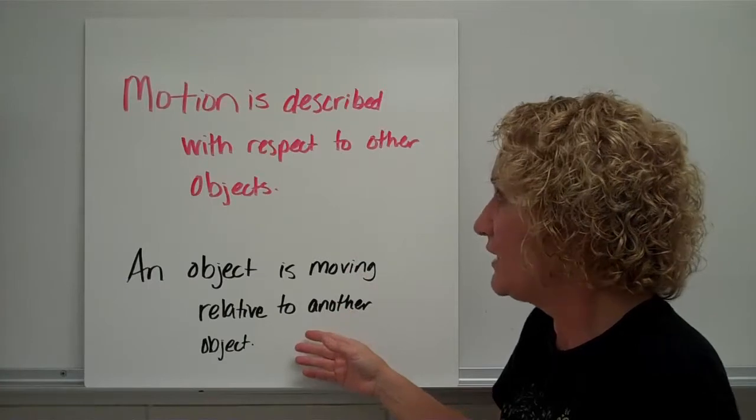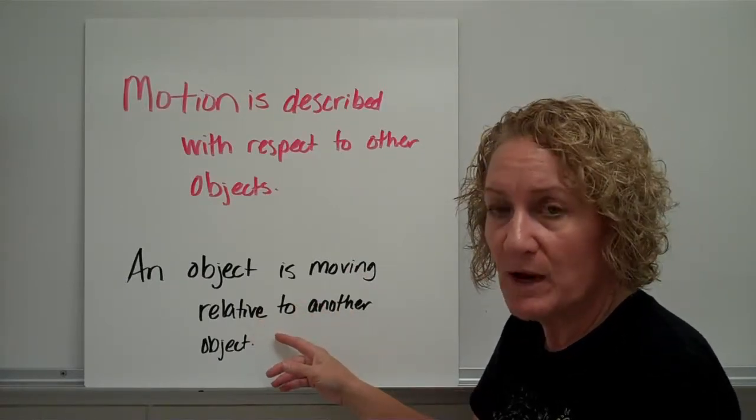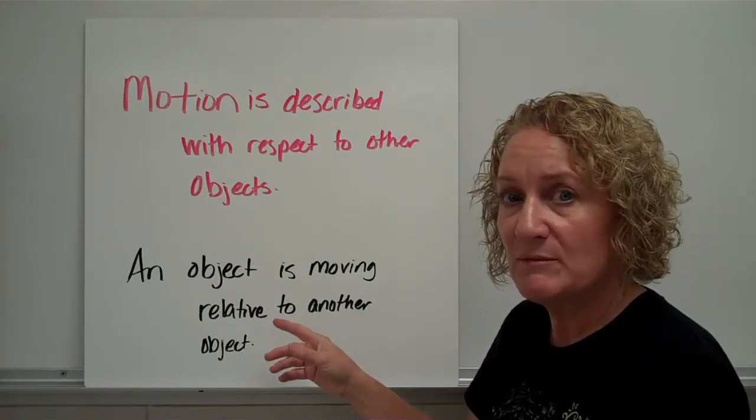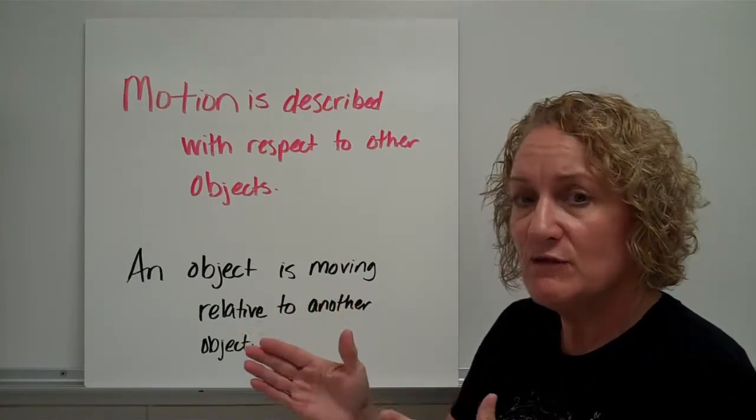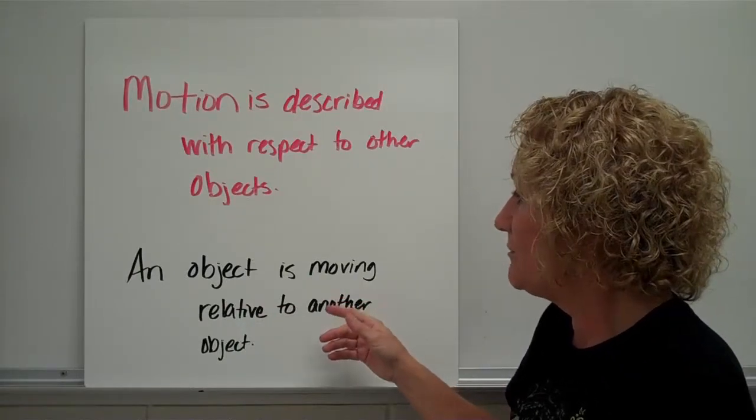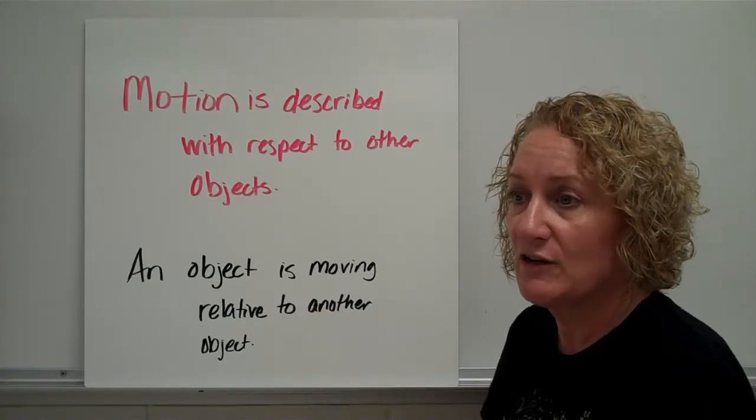An object is moving relative to another object. Instead of the word relative, you could use compared to. An object is moving if you can compare it to something that's not moving. When you have two things moving at the same time, it's a little bit harder to figure out, but you can tell that objects are moving if something else isn't moving.